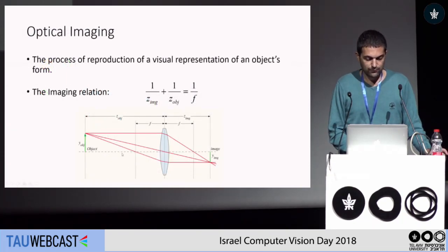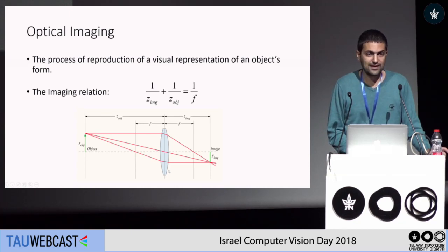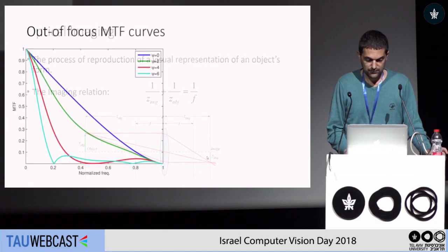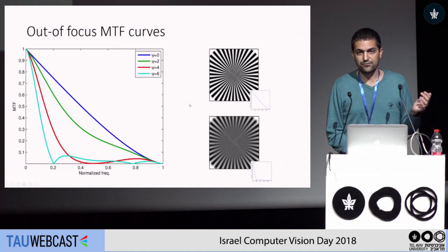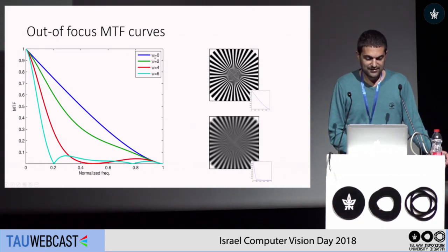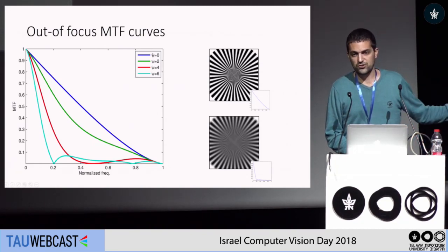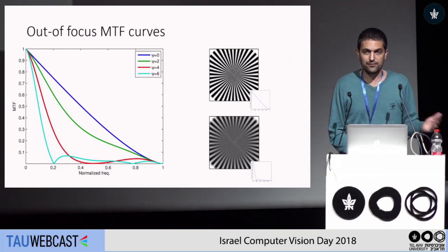In standard optical imaging, when you take a photo of an object, you want it to be in focus. If the object is in the focus plane, you get it in focus. Yet if the object is not in focus, different frequencies have different distortion in their contrast. You can see that here you get an object which is in focus, and here you have an object which is not in focus. These gamma values depend on how much you are out of focus — the more you are out of focus, the more change in contrast you get for different frequencies.